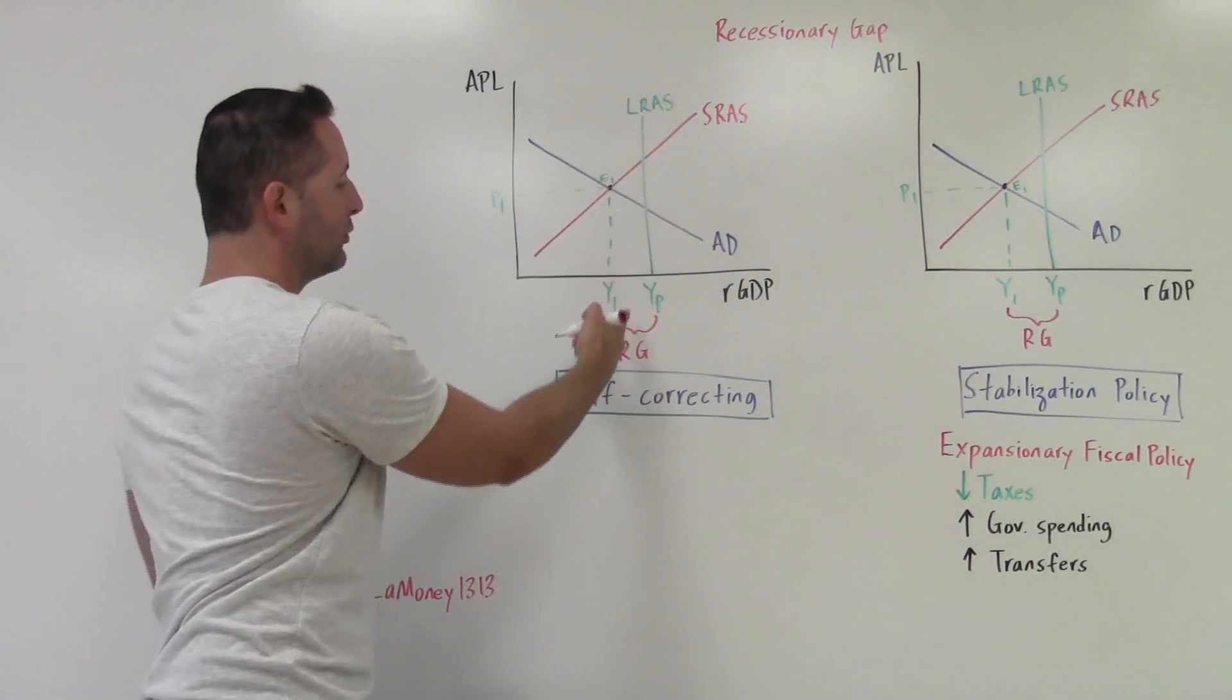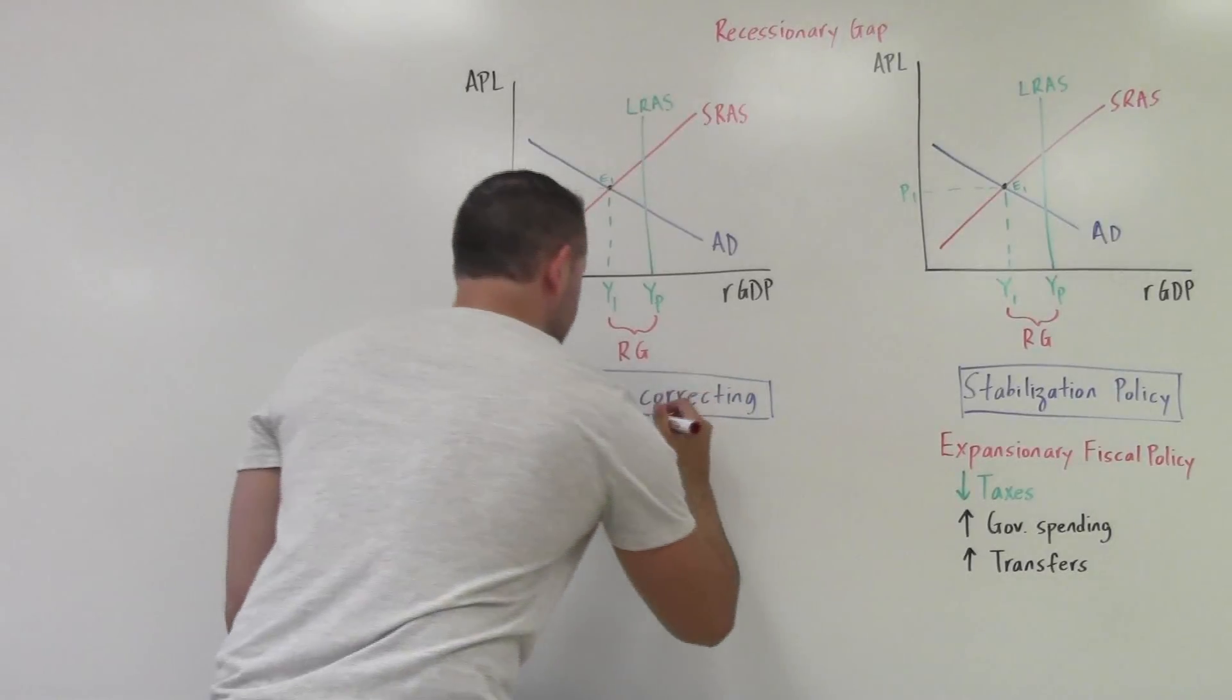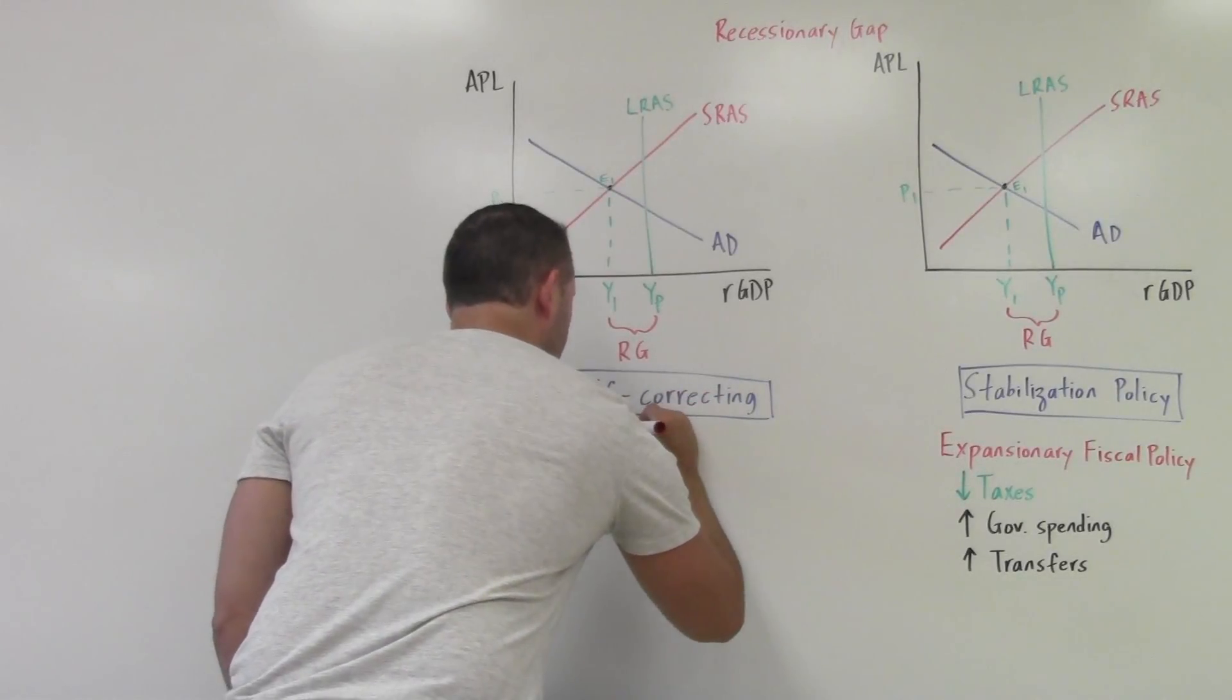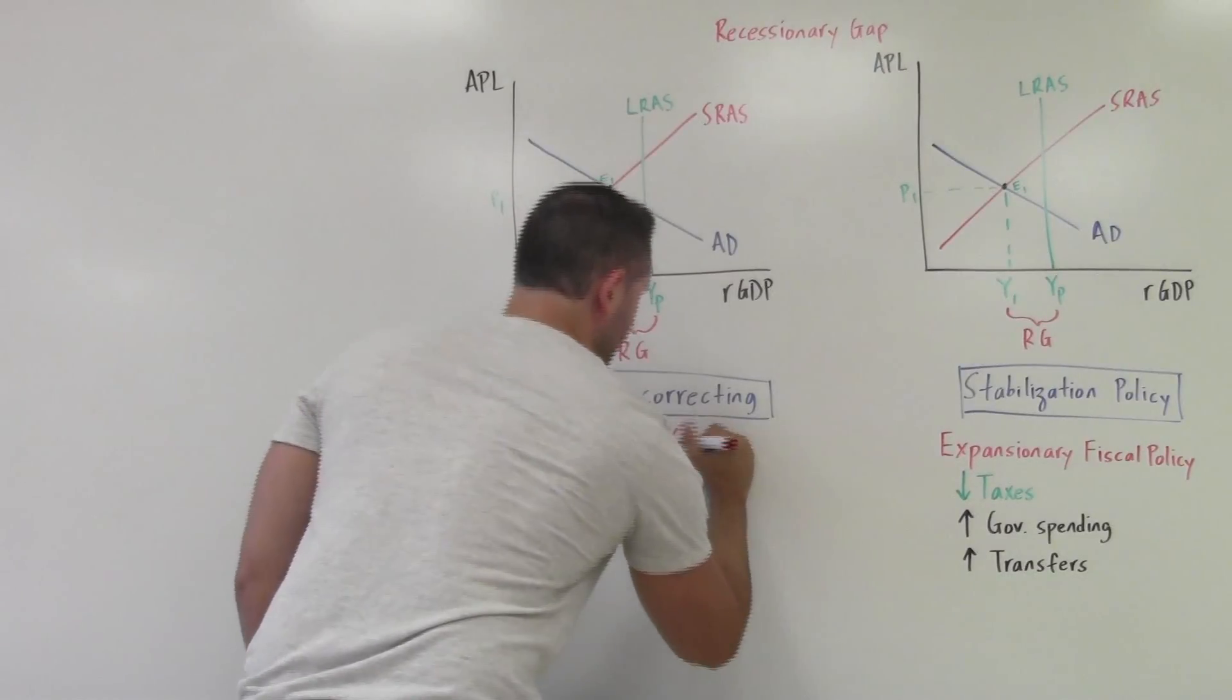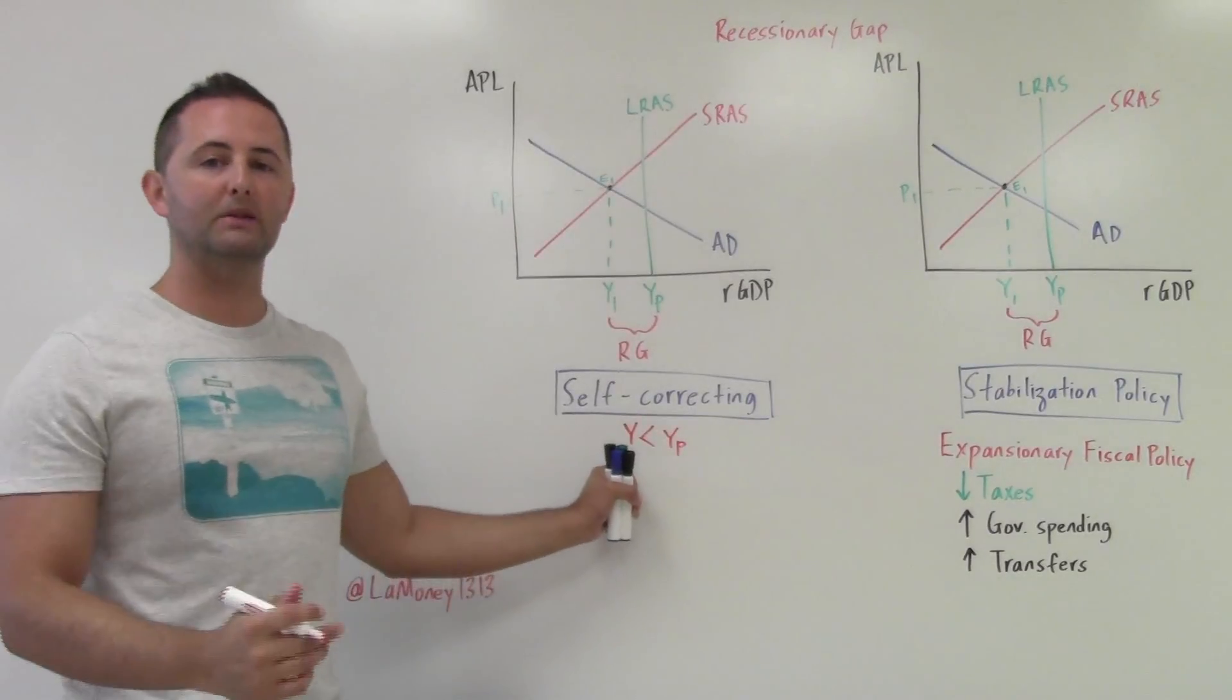So step one, we're looking at where actual output. We can just define that in our recessionary gap, actual output is less than potential output. That's where we are.